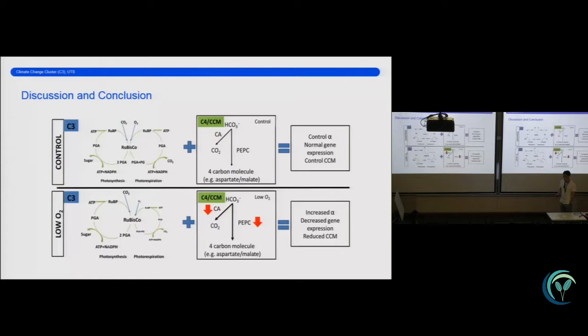So what does this all mean? Well, essentially, obviously under control conditions, photosynthesis and photorespiration are occurring as they normally would, and carbonic anhydrase and phosphoenolpyruvate carboxylase are being expressed at the regular level. However, when we apply a low oxygen treatment over 24 hours, what we think is happening is that the reduced oxygen concentration within the water column is potentially reducing the instances of photorespiration, and thereby enhancing the photosynthesis.